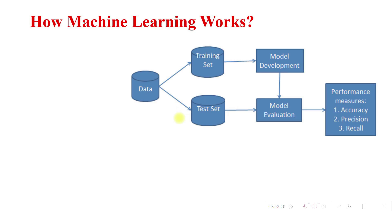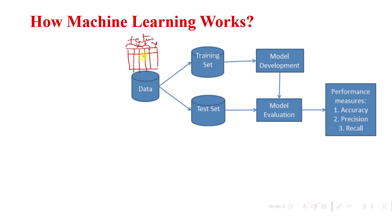For any machine learning system, data is very important. The data is in the form of features and corresponding class labels, represented as a table with rows and columns. The columns are called features, along with a corresponding target variable. Each row is called an instance.